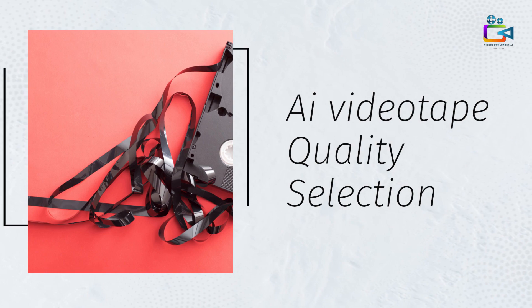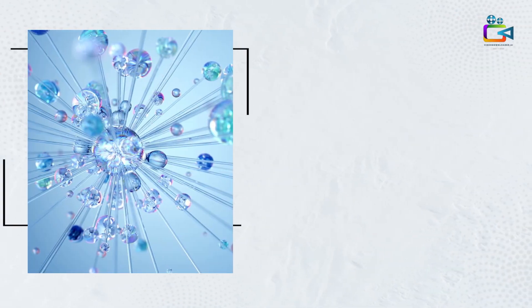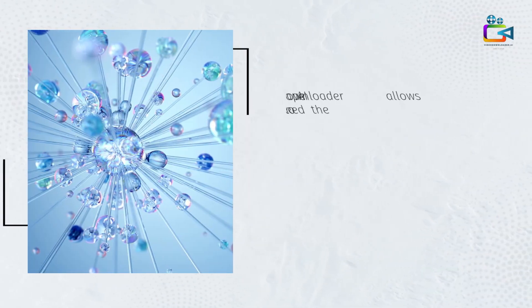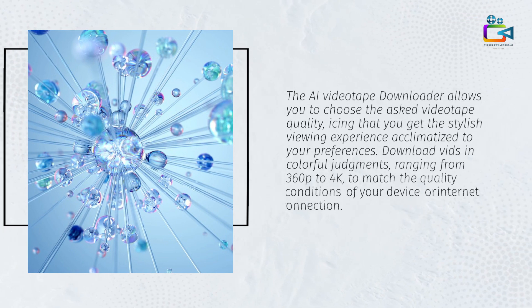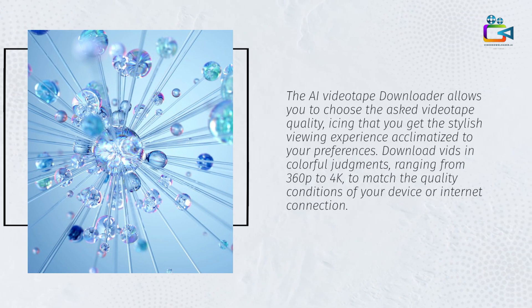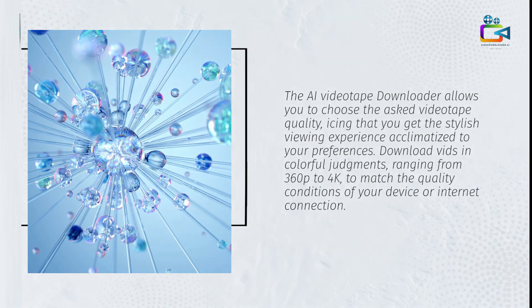Video Quality Selection: The AI Video Downloader allows you to choose your desired video quality, ensuring that you get the best viewing experience tailored to your preferences. Download videos in various resolutions, ranging from 360p to 4K, to match the quality requirements of your device or internet connection.